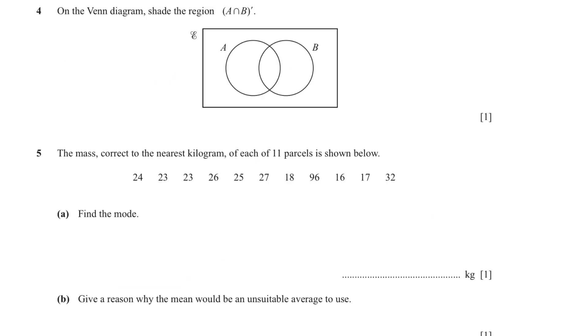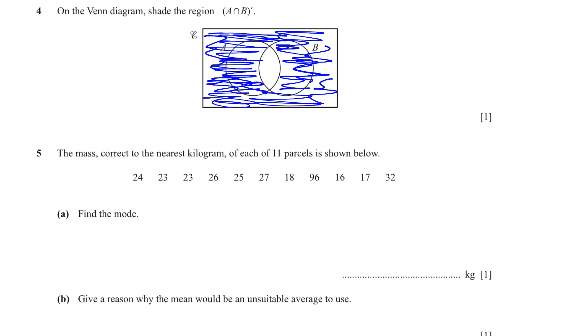Question number four. We have been given a Venn diagram and we have to shade the region A intersection B complement. Learn to understand that complement means not. So A intersection B is this inside part which is overlapping. A intersection B complement or A intersection B naught is everything except that part. So it is this part.